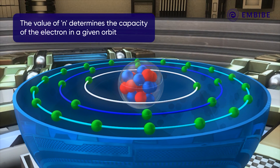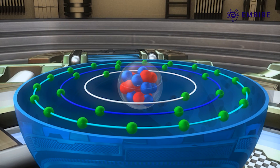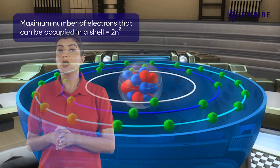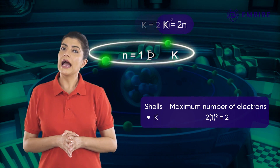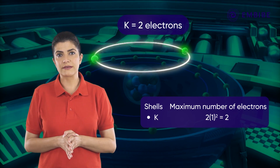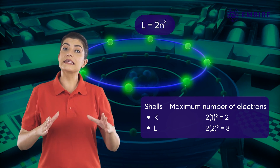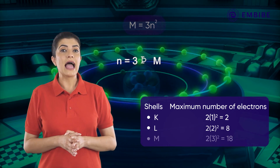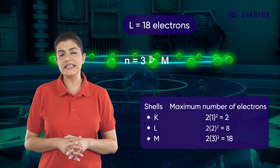Each shell has a maximum capacity to hold electrons given by the formula 2n², where n is the principal quantum number. For example, the K shell (n=1) can hold a maximum of 2 electrons, the L shell (n=2) can hold a maximum of 8 electrons, and the M shell (n=3) can hold a maximum of 18 electrons, and so on.